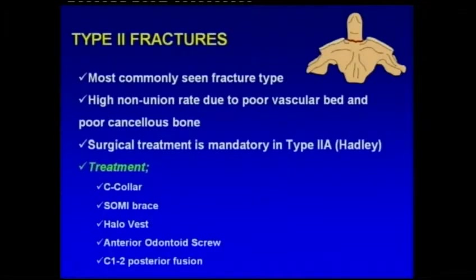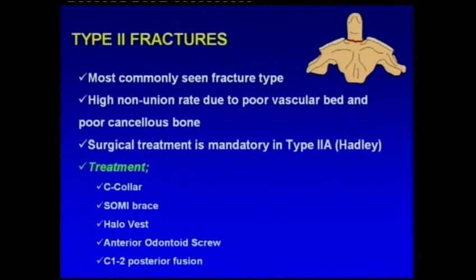Type 2 fractures are the most commonly seen fracture type. They have a high non-union rate due to poor vascular bed and poor cancellous bone. Conservative treatment can be tried, but surgical treatment is mandatory in type 2A fractures.